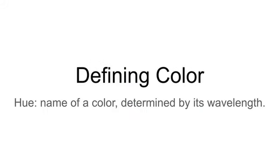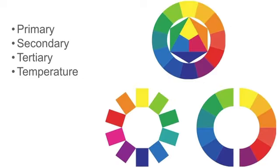Defining color. Hue is the name of a color, determined by its wavelength. Physicists, painters, and philosophers have devised numerous systems to organize hues. As we see in Johann Aiton's 12-step color wheel, a combination of two adjacent primaries creates secondary colors.